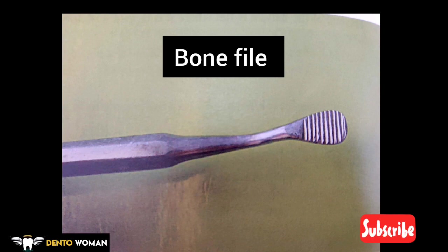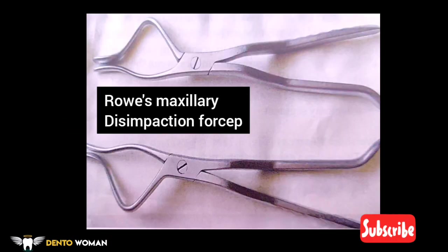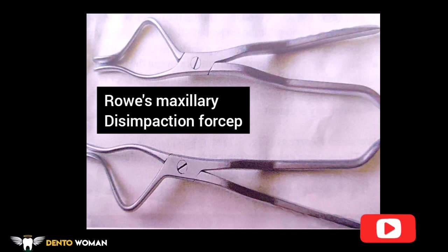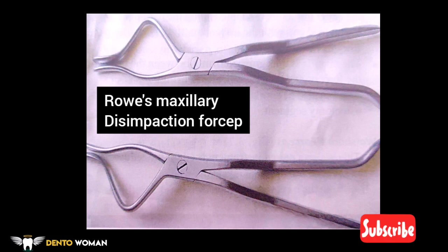Rowe's maxillary disimpaction forcep — this is a paired instrument used in maxillary fractures. It has two beaks, one of which has a large curvature compared to the other; the beak with lesser curvature is usually padded. It is used in the reduction of Le Fort fractures of the maxilla, and may be used to disimpact and reduce impacted maxillary fractures.